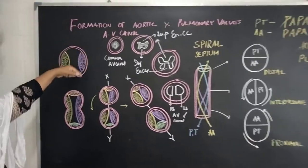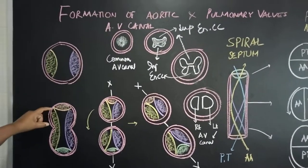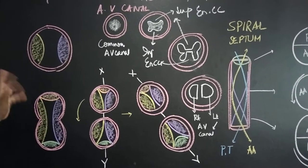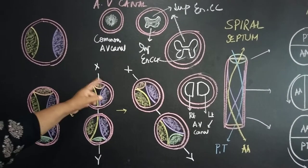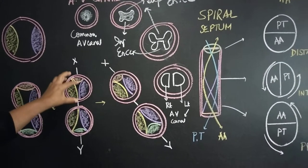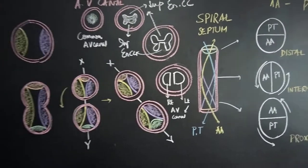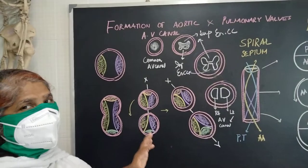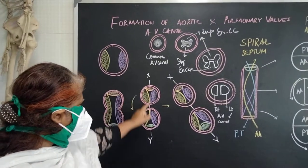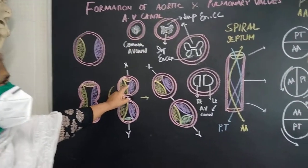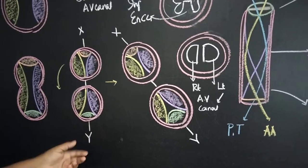This is the main truncus arteriosus base. First, endocardial cushions appear superiorly and inferiorly, then anteriorly and posteriorly. The valve starts as a single truncal valve and is then divided into two separate valves — one at the base of the pulmonary trunk and one at the base of the ascending aorta. For the pulmonary trunk: two anterior and one posterior cusp. For the ascending aorta: two posterior and one anterior cusp.